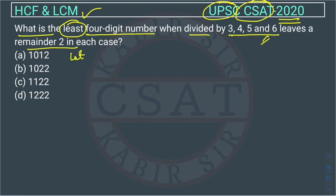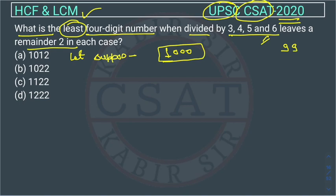Whenever this kind of question comes, we assume what the minimum four-digit number can be. The minimum four-digit number is 1000. This is the least four-digit number. Note that in the exam they can also ask for the greatest four-digit number — in that case we would consider 9999. Now we will find the LCM of these numbers because that number should be divisible by them.